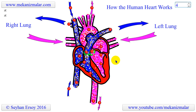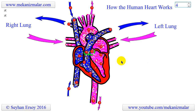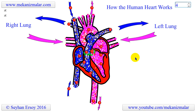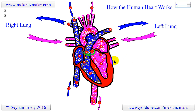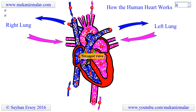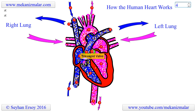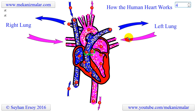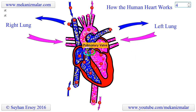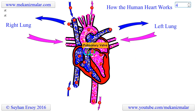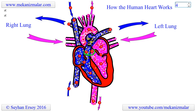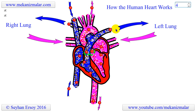Four valves control the flow of blood from the atria to the ventricles and from the ventricles into the 2 large arteries connected to the heart. The tricuspid valve is on the right side of the heart, between the right atrium and the right ventricle. The pulmonary valve is on the right side of the heart, between the right ventricle and the entrance to the pulmonary artery, which carries blood from the heart to the lungs.